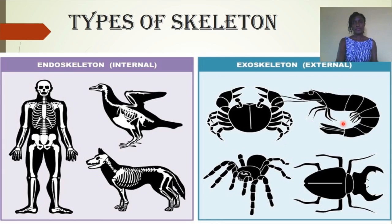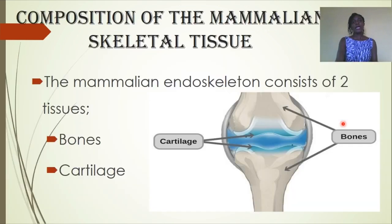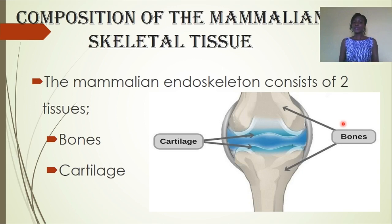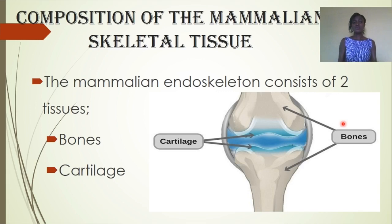Now, the composition of the mammalian skeletal tissue. Looking at our assignment, I asked you to differentiate between bone and cartilage. The mammalian skeleton consists of these two tissues: bone and cartilage. When you're chewing a piece of chicken, you crunch into the harder bits — that is known as bone.